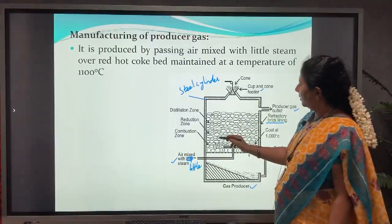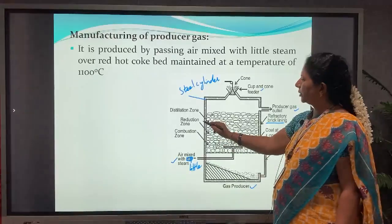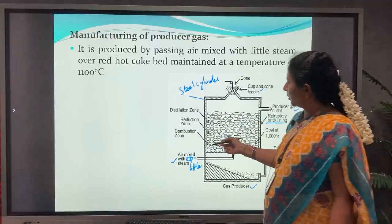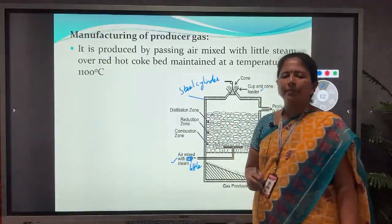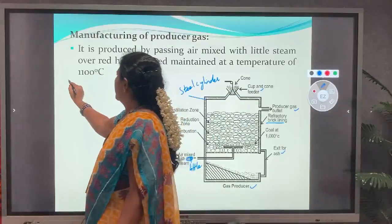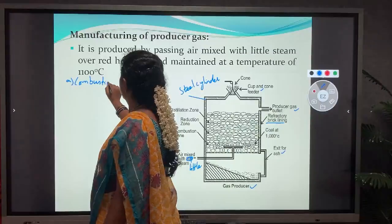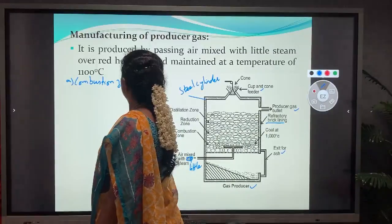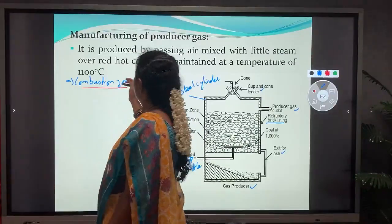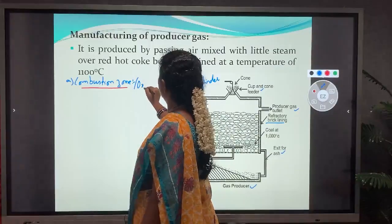There are three zones within the gas producer: the combustion zone, the reduction zone, and the distillation zone. The combustion zone is also called the oxidation zone.